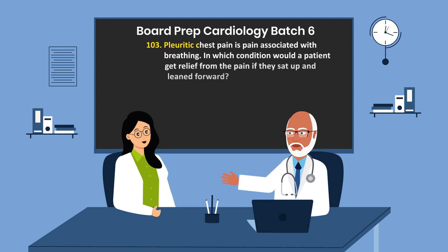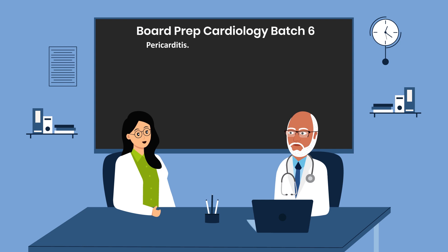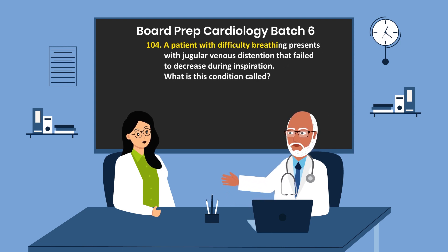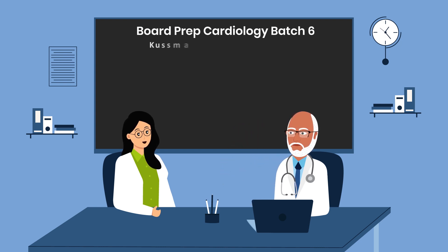Question 103. Pleuritic chest pain is pain associated with breathing. In which condition would a patient get relief from the pain if they sat up and leaned forward? Pericarditis. Question 104. A patient with difficulty breathing presents with jugular venous distension that failed to decrease during inspiration. What is this condition called? Kussmaul's sign.